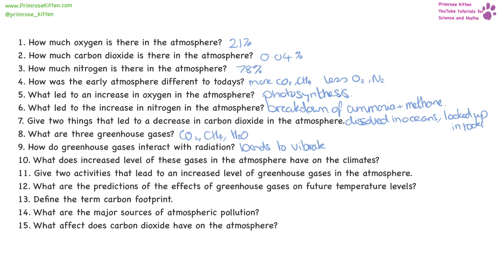What does an increased level of these gases in the atmosphere have to do with the climate? It changes the climate because it traps heat in, which means some places are going to get hotter, some places are going to get colder, some places are going to get wetter, and some places are going to get drier.